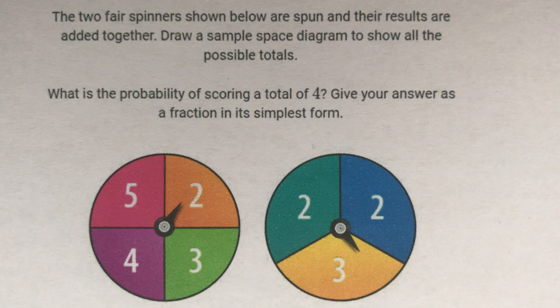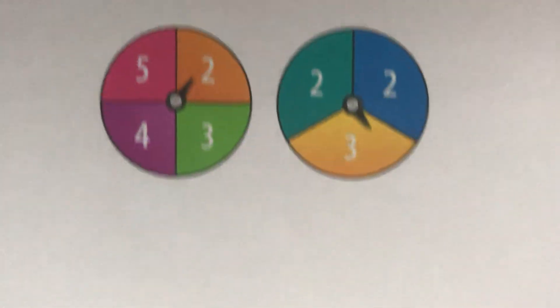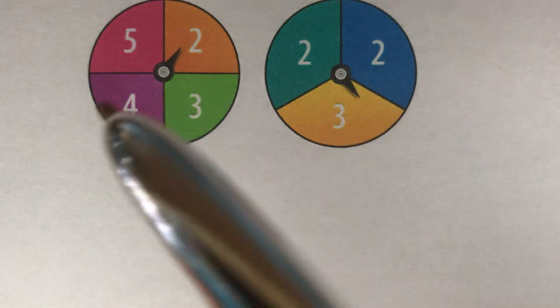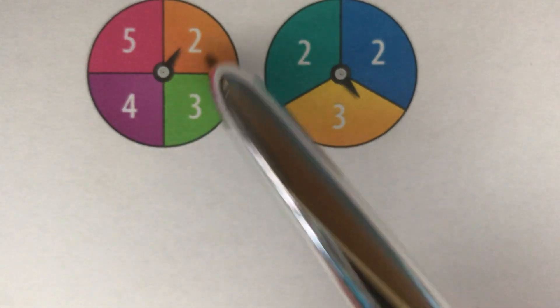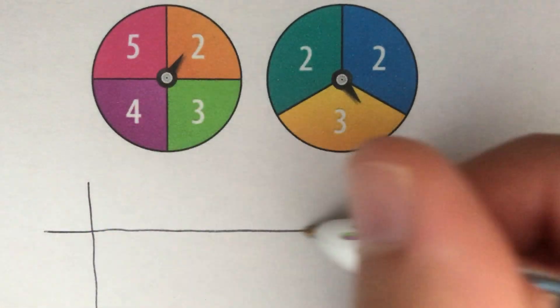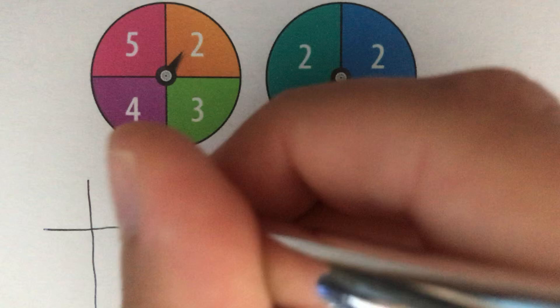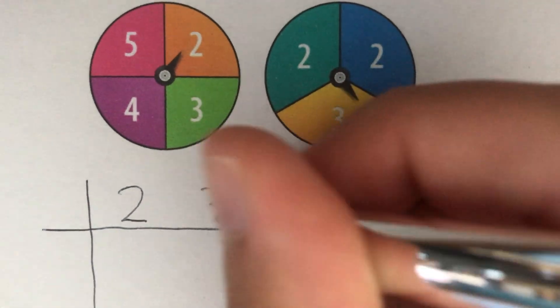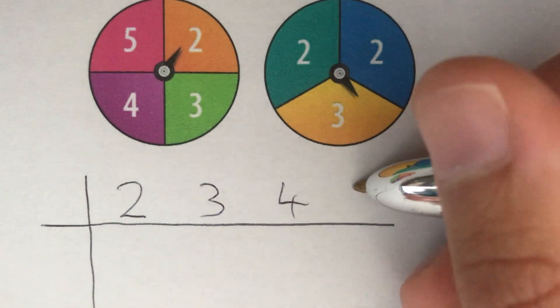So the first thing we need to do is draw our sample space diagram. If we look at our two spinners, our first spinner has the options 2, 3, 4 and 5. So we start drawing out our sample space diagram. For spinner 1, we can get 2, 3, 4 or 5.